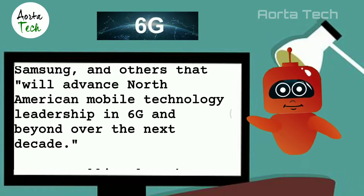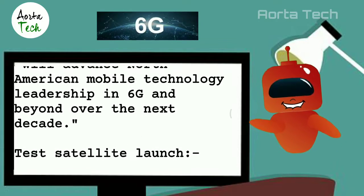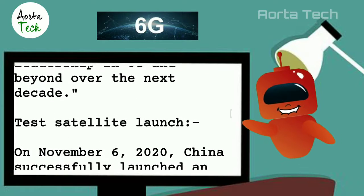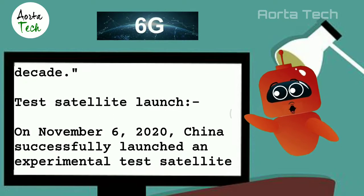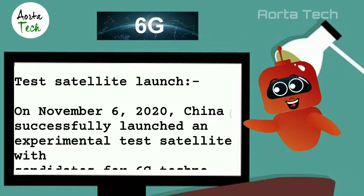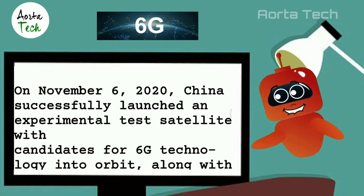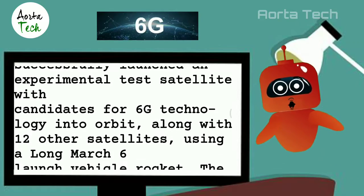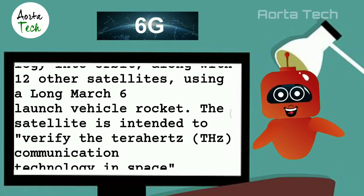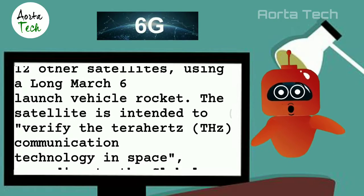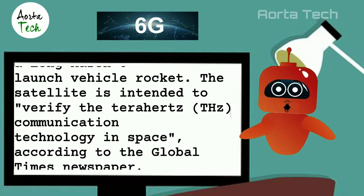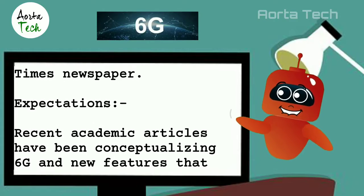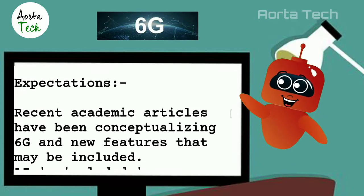On November 6, 2020, China successfully launched an experimental test satellite with candidates for 6G technology into orbit, along with 12 other satellites, using a Long March 6 launch vehicle rocket. The satellite is intended to verify terahertz (THz) communication technology in space, according to the Global Times newspaper.